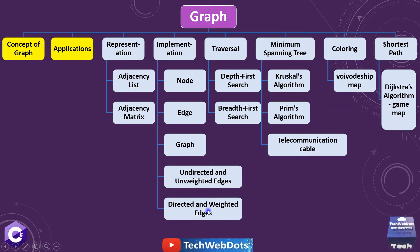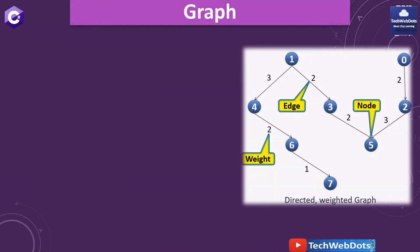Traversal that contains depth-first search and breadth-first search, minimum spanning tree that contains algorithms and examples, coloring, shortest path and algorithm examples. So all these points we will cover one by one. Let's move ahead. I have prepared one example for you so you can understand what actually graph is.